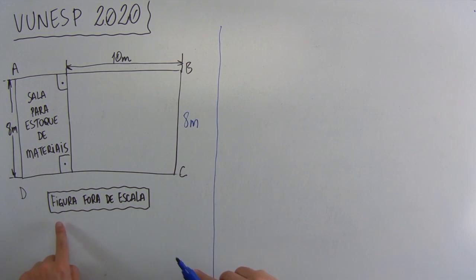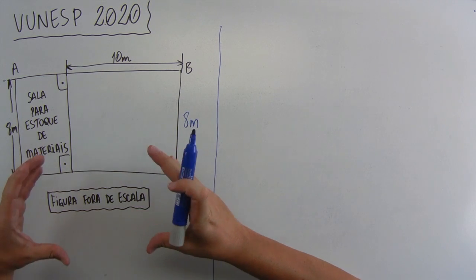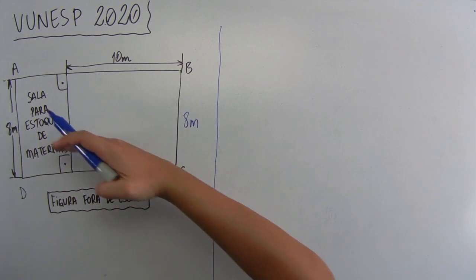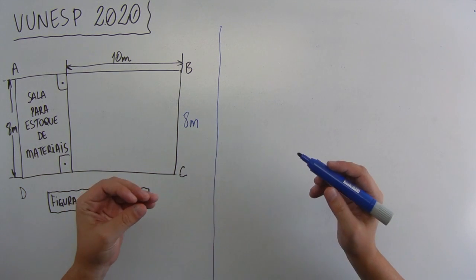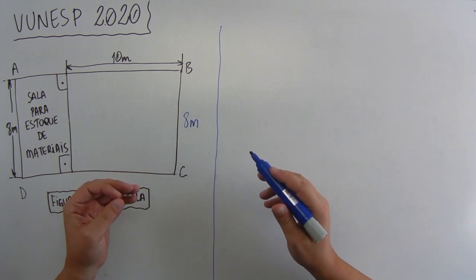Não tenta, porque às vezes a figura, por isso que tá escrito fora de escala. Às vezes, na hora de imprimir a prova, a figura achata e até parece que aqui é um quadrado. E aí, se você fizer desse jeito, você vai errar a questão. Então, agora sim, vamos ler o enunciado pra gente ver o que a gente precisa fazer.